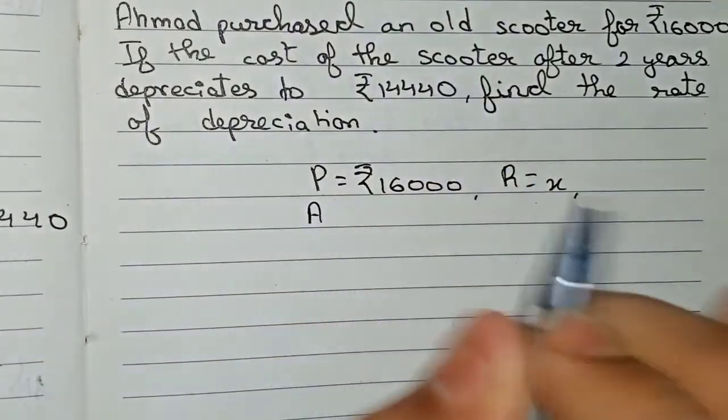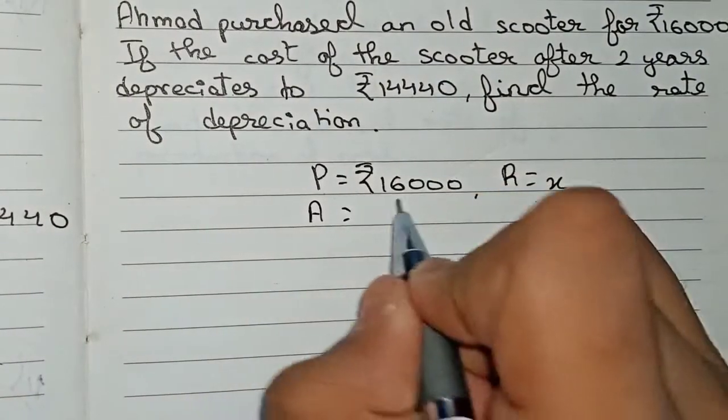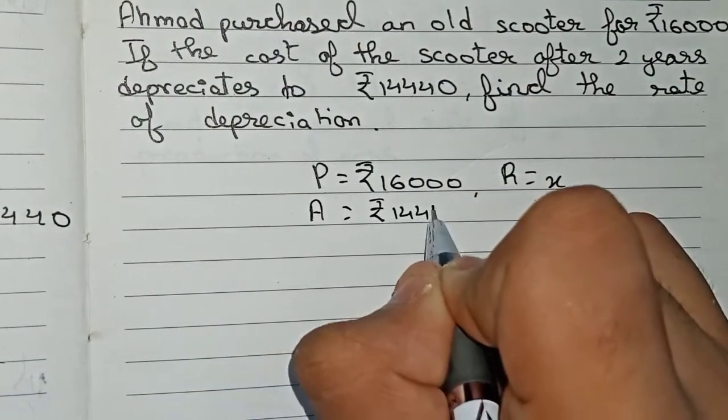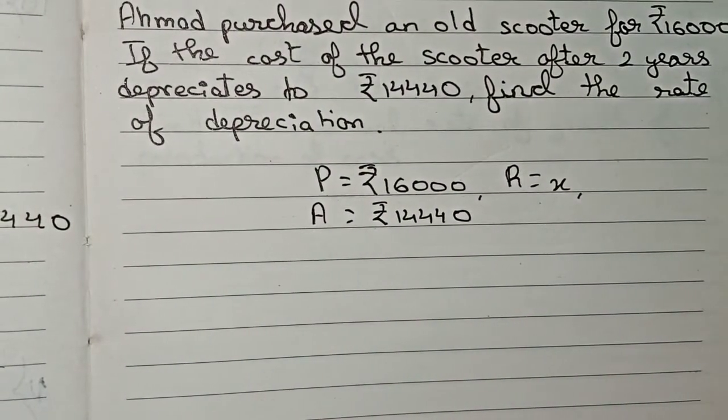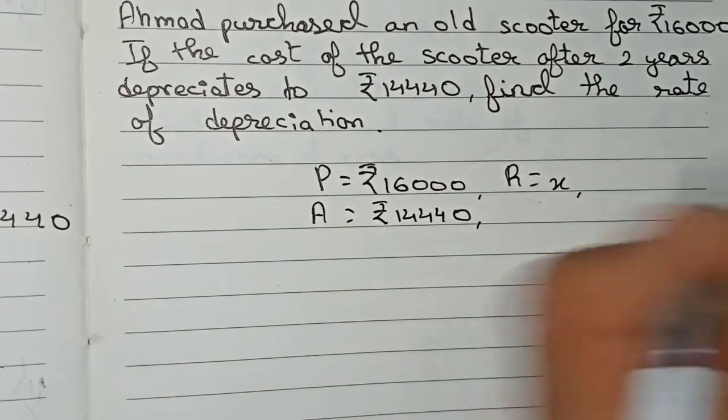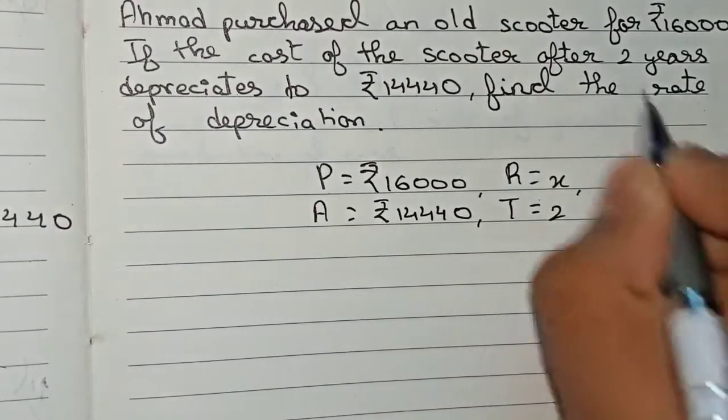And the amount A to which it stands after two years is given as rupees 14,440. With this information, we have to find out the rate of depreciation. And one more information: the time T is given as two years.